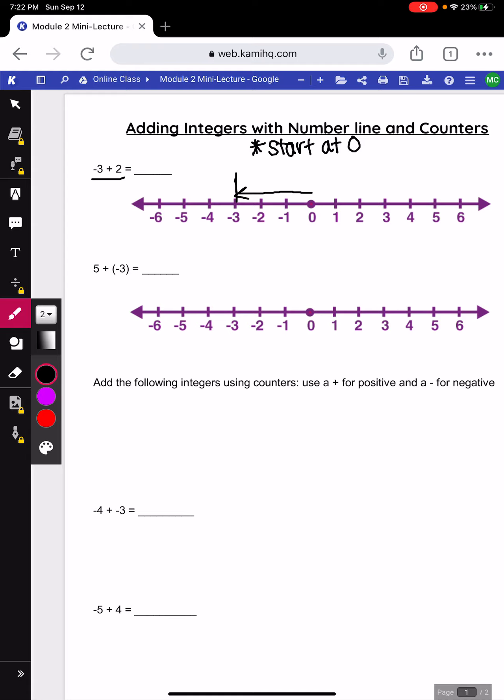Now I'm adding a positive 2 so I'm going to go to the right 2, draw another arrow to get my answer of negative 1. Alright, let's try another one.